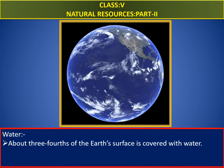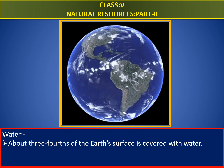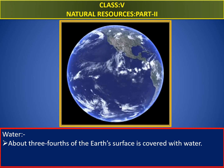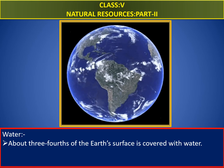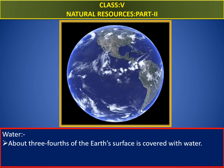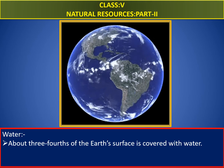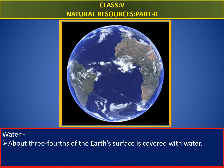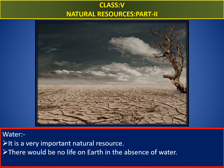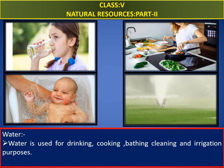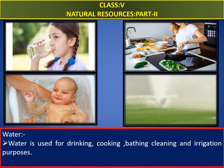Now let us learn about water. Three-fourths of the earth's surface is covered with water, yet there is still scarcity of water across the globe. This is because around 97% of total water is in oceans, which is salty. In our daily life, water is a very important natural resource. There would be no life on earth in the absence of water. We can use water for drinking, cooking, bathing, cleaning, and irrigation purposes.